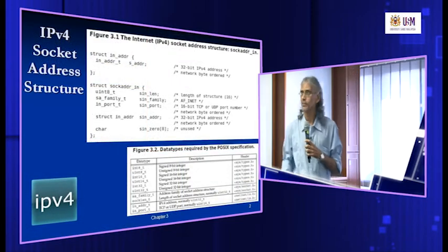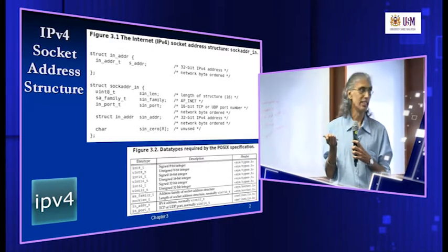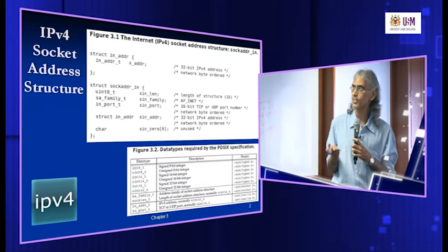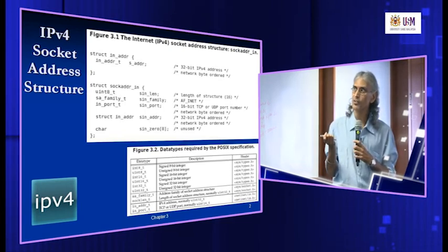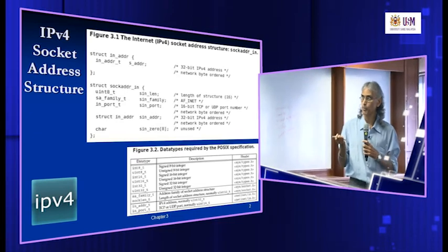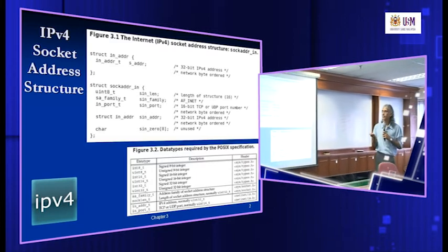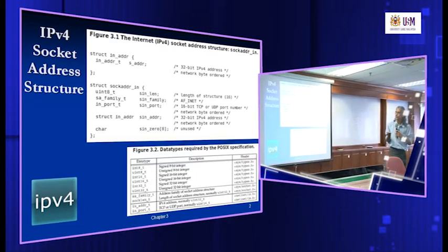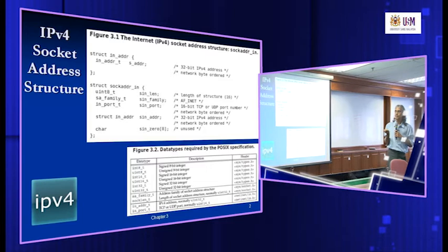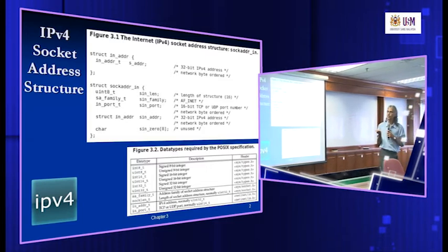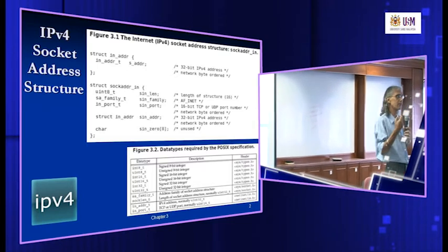The sockaddr_in structure has five components. The first is the length — sin_len — which stores the length of the structure. The socket structure we use is fixed at 16 bytes. The second component is the family — sin_family — where we specify whether this socket is IPv4 or IPv6.